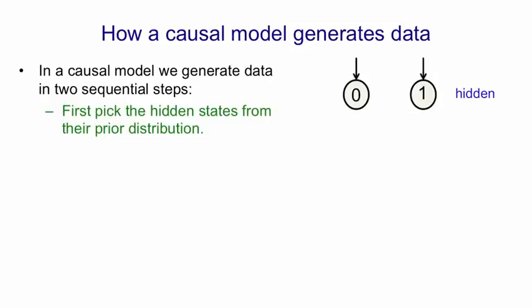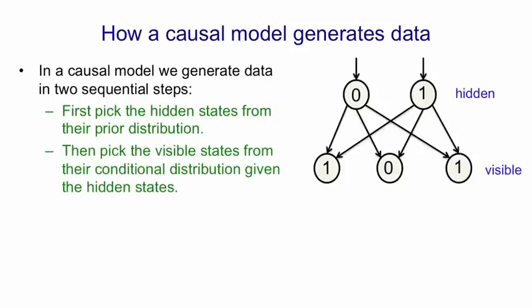Then, once we've picked a state for those, we would use those to generate the states of the visible units by using weighted connections in this model. So this is a kind of neural network causal generative model.